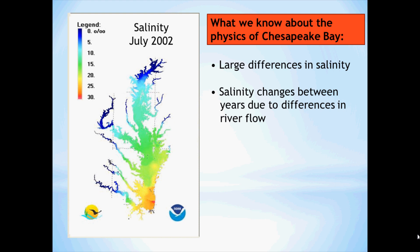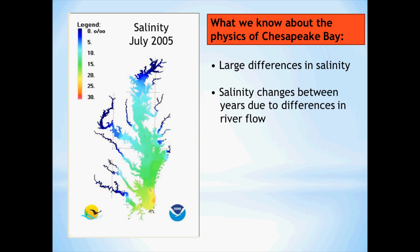In July 2002, it was a low flow year, so there was a lot of salt in the bay and the salinities were high. In July 2003, the salt was pushed out of the estuary by the high freshwater flow that came in through the rivers. Here's salinity in July 2005, and you can see again that the estuary has changed.